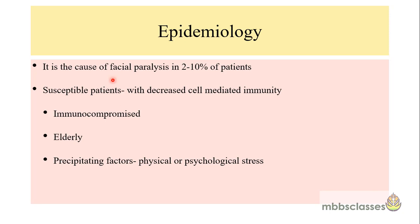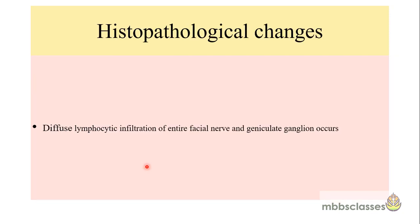Ramsay-Hunt syndrome is a cause of facial paralysis in approximately 2-10% of patients. The type of facial palsy is lower motor neuron type. The susceptible groups are immunocompromised patients, elderly patients, and those in whom reactivation is precipitated by physical or psychological stress. Studies of the temporal bone have shown diffuse lymphocytic infiltration of the entire facial nerve and the geniculate ganglion in cases of Ramsay-Hunt syndrome.